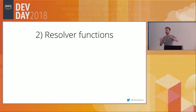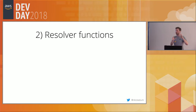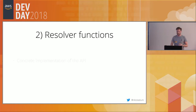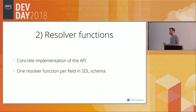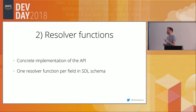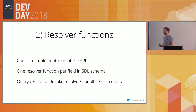Now let's talk about resolver functions - we know the abstract schema, but how does the server decide what to return for an incoming query? This is the responsibility of resolver functions. They provide the concrete implementation of the API. In general you have one resolver function per field in the schema, each responsible for fetching data for that specific field. Executing a query comes down to invoking all resolver functions for the fields contained in that query.